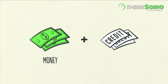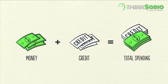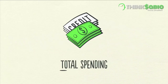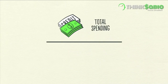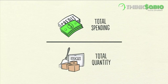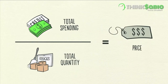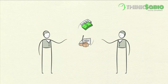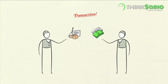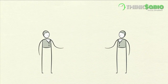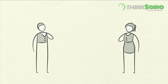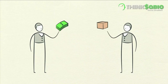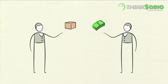Adding together the money spent and the amount of credit spent, you can know the total spending. The total amount of spending drives the economy. If you divide the amount spent by the quantity sold, you get the price. And that's it — that's a transaction. It's the building block of the economic machine. All cycles and all forces in an economy are driven by transactions, so if we can understand transactions, we can understand the whole economy.